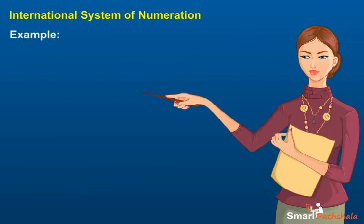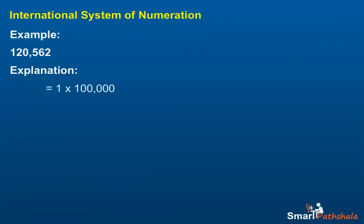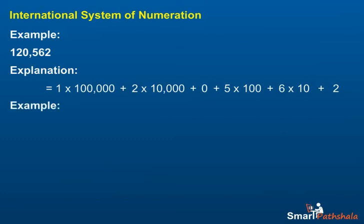Example: Write 120562 in expanded form. The expanded form is: one multiplied by one hundred thousand, plus two multiplied by ten thousand, plus five multiplied by one hundred, plus six multiplied by ten, plus two.